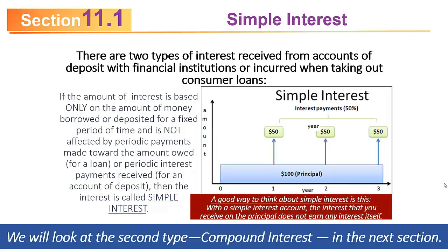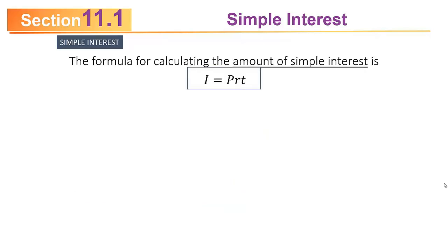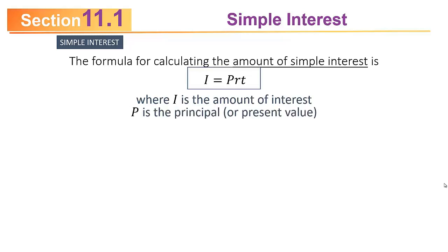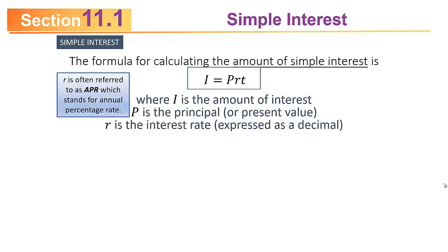The second type, called compound interest, is something we'll talk about in the next section. Let's focus on simple interest. The formula for calculating the amount of simple interest is given by I = PRT, where I is the amount of interest earned or paid, P is the principal or present value, r is the interest rate written as a decimal — sometimes called APR, which stands for annual percentage rate — and t is the time in years.